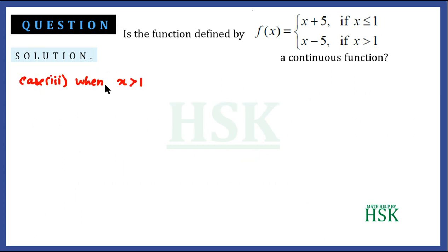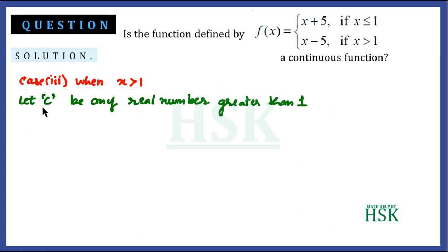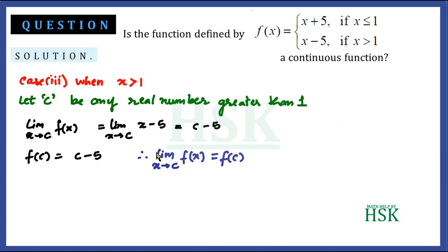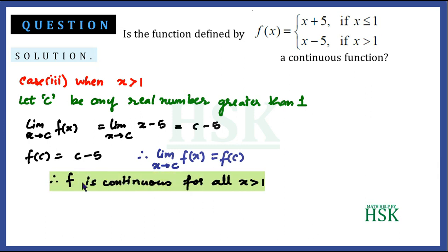In the third case, when x is greater than 1, we assume c to be any real number greater than 1. The limit as x tends to c of f(x) equals the limit of x - 5, since for x > 1, f(x) = x - 5. Applying the limit gives c - 5, and f(c) = c - 5 as well. Therefore, f is continuous for all x greater than 1.